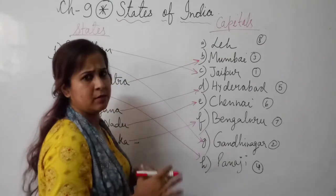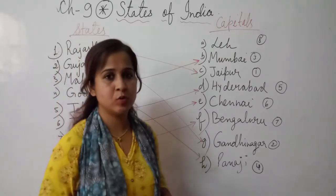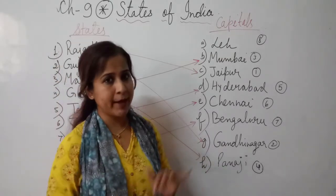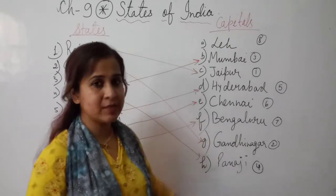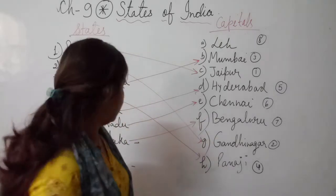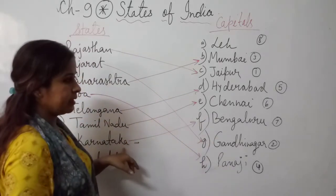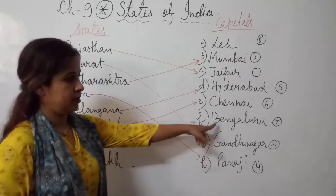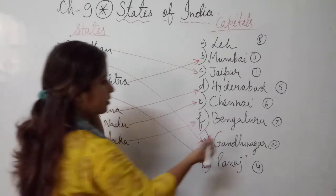Karnataka is a state and its capital is Bangalore, also known as Bengaluru. Both names refer to the same place. So the capital of Karnataka is Bangalore.